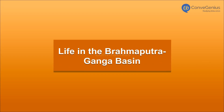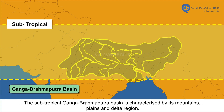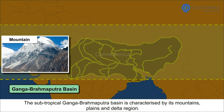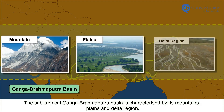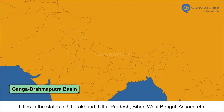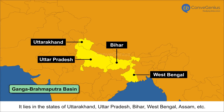Life in the Brahmaputra Ganga Basin. The subtropical Ganga Brahmaputra Basin is characterized by its mountains, plains and delta region. It lies in the states of Uttarakhand, Uttar Pradesh, Bihar, West Bengal, Assam, etc.